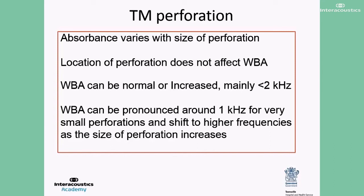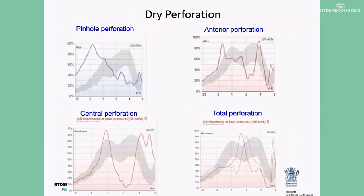Location of tympanic membrane perforation does not greatly affect absorbance. However, absorbance varies with the size of the perforation, with small perforation having the largest effect. Absorbance is shown to increase with tympanic membrane perforation at frequencies below 1000 Hz. It can be pronounced around 1000 Hz for very small perforations, and as the size of the perforation increases, the absorbance peak shifts to higher frequencies. While there is no generic pattern, slightly pronounced absorbance in the low to mid frequencies can be seen as the size varies from pinhole to total perforation.